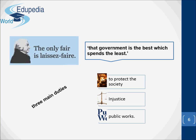Adam Smith, in his book The Wealth of Nations published in 1776, observed that the sovereign has three main duties to perform: a) to protect the society from violence and invasion of other independent societies, b) to protect against injustice, and c) erecting and maintaining certain public works.